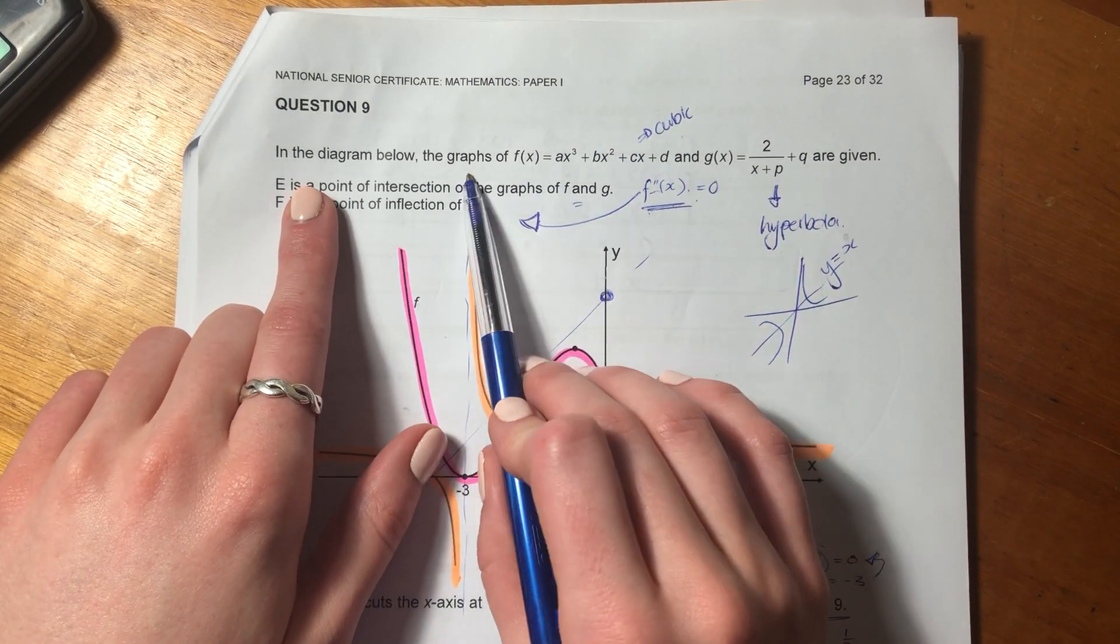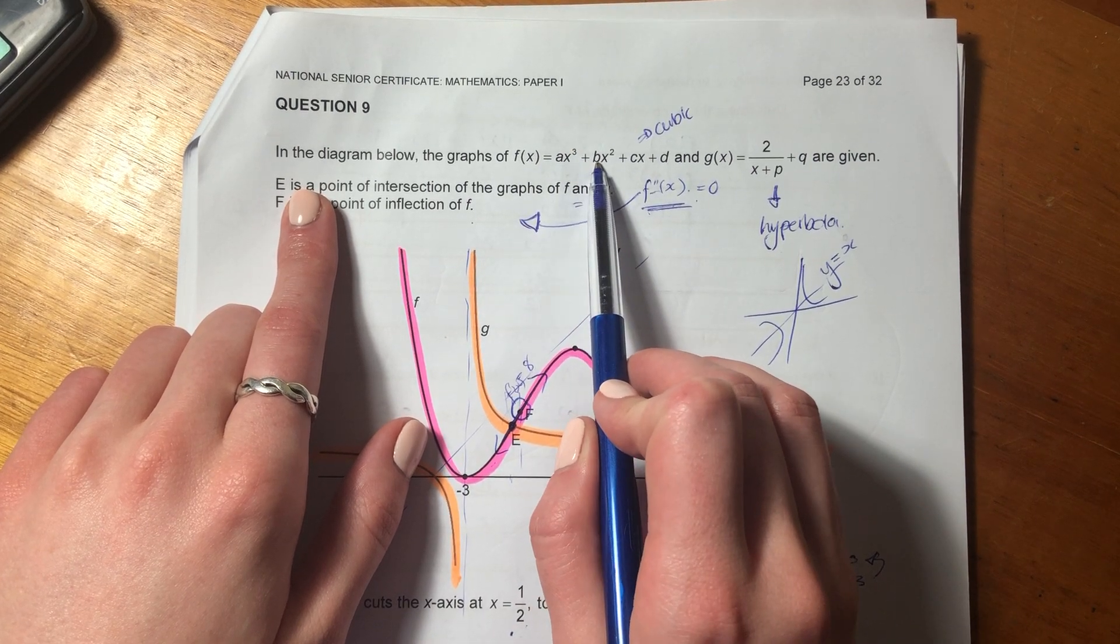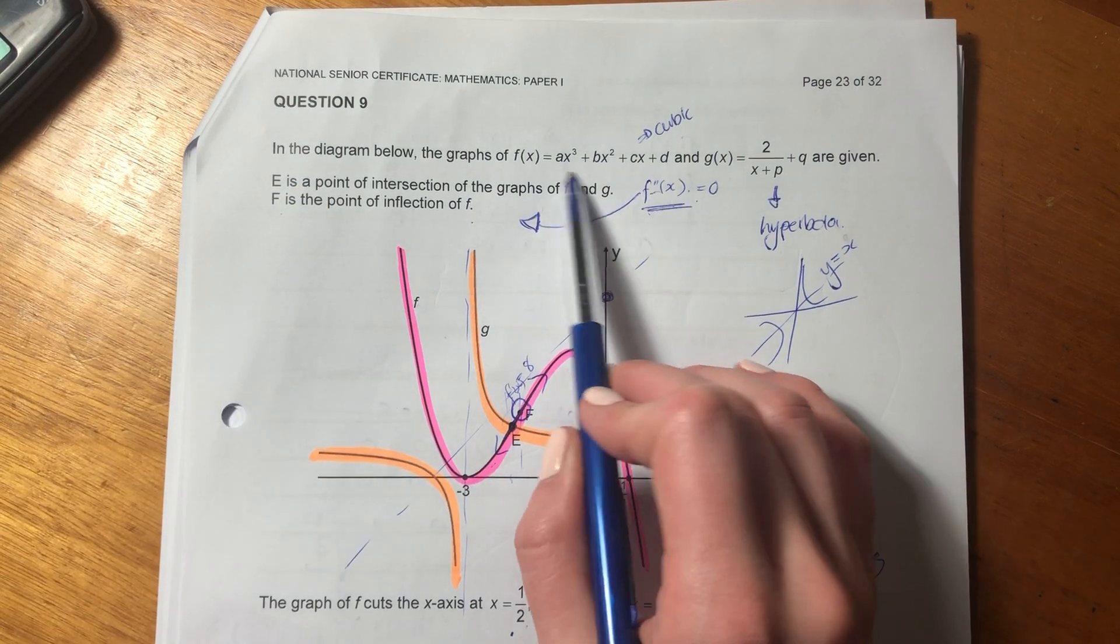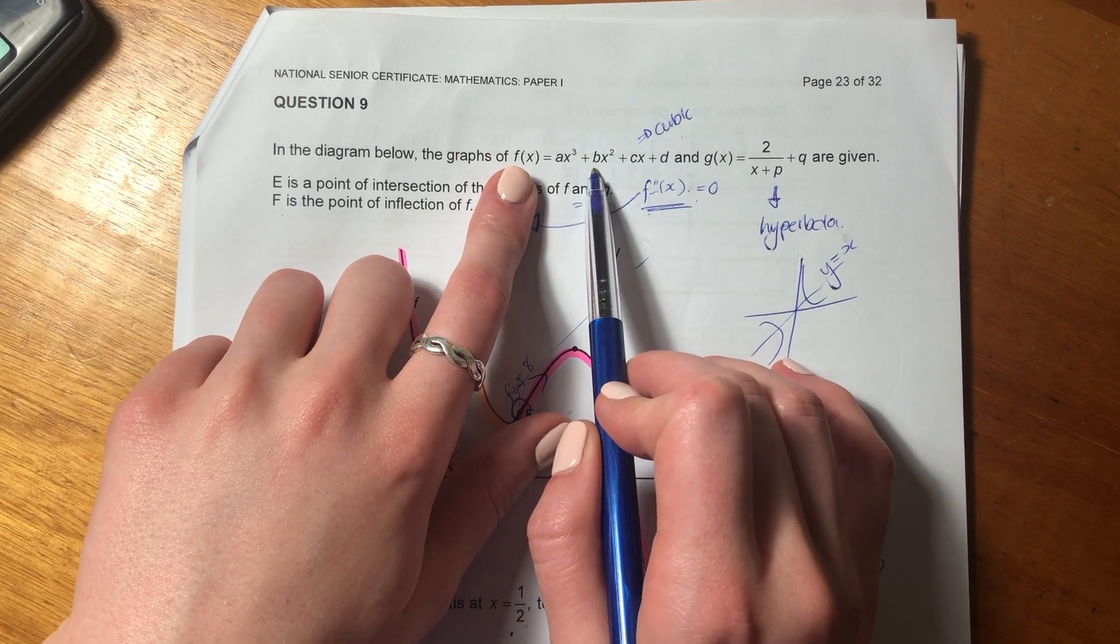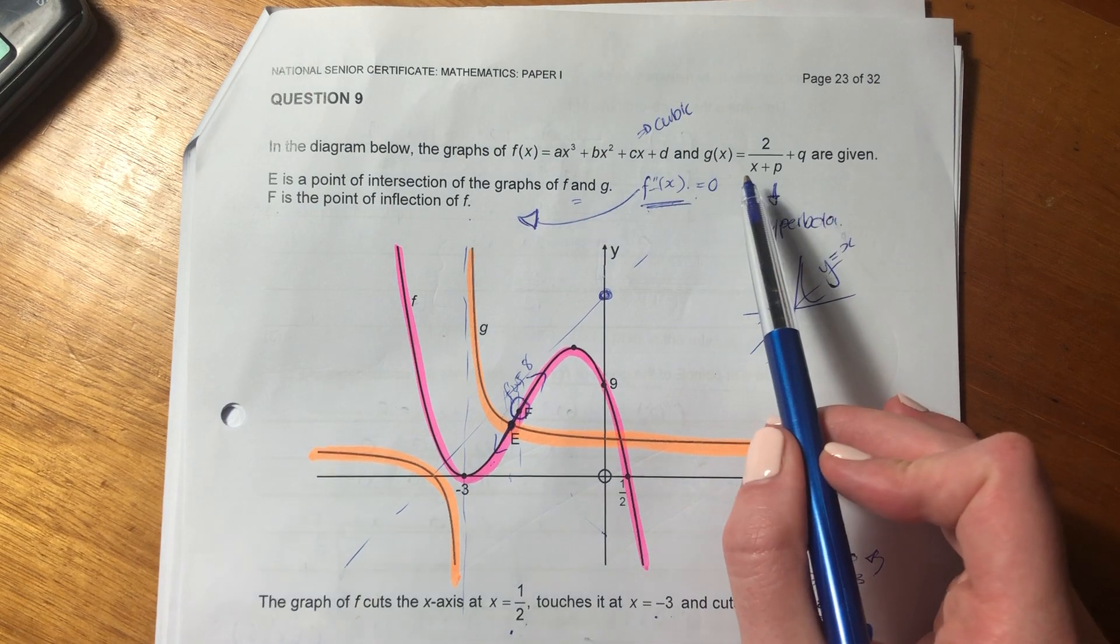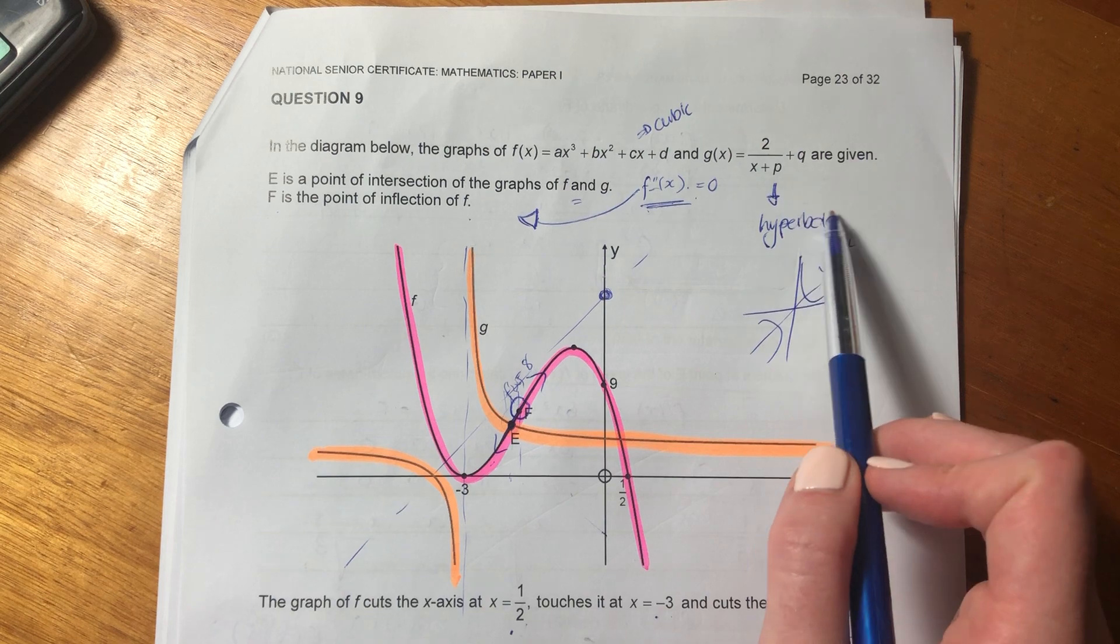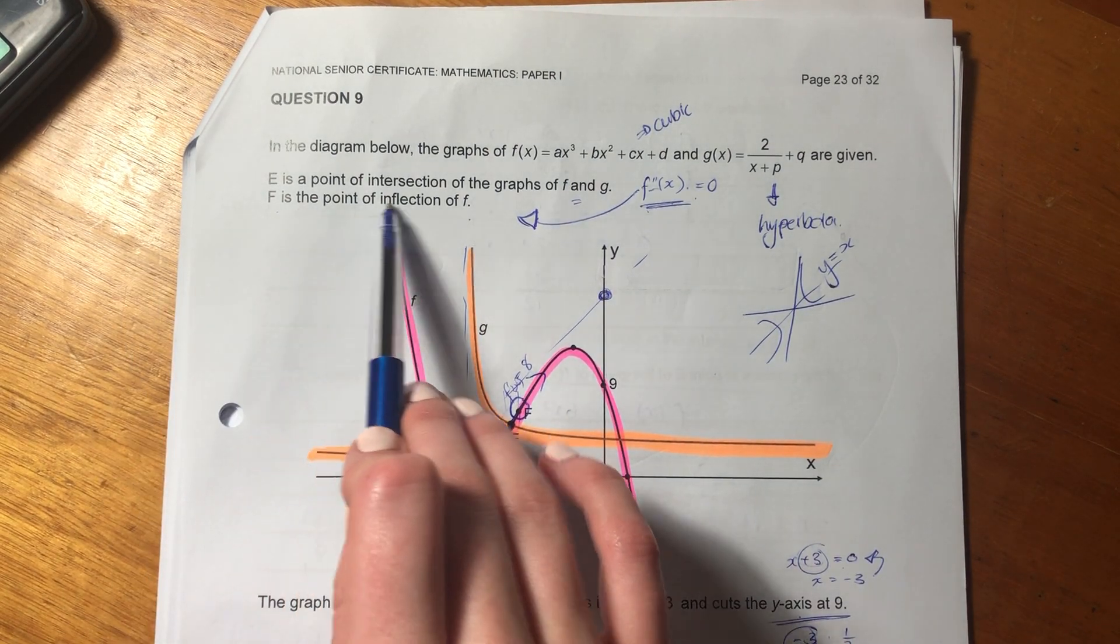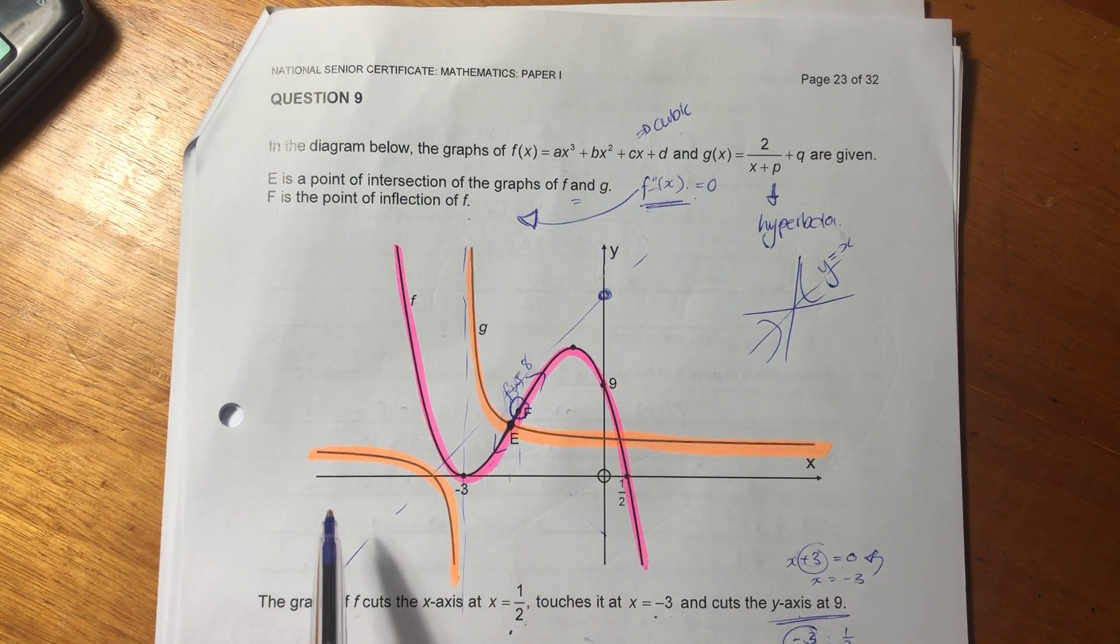It says in the diagram below, the graphs of f(x) = ax³ + bx² + cx + d, this is a cubic graph, and g(x), which is a hyperbola. E is a point of intersection of the graphs f and g.